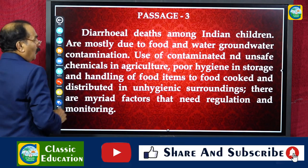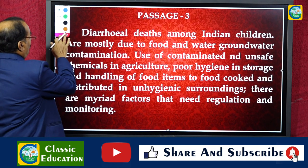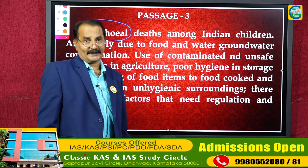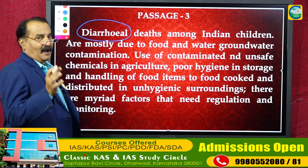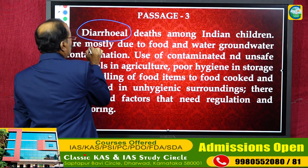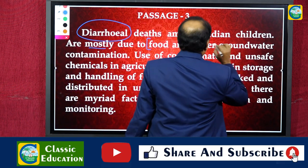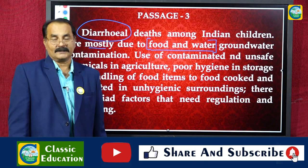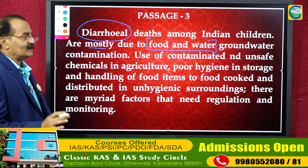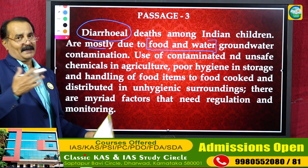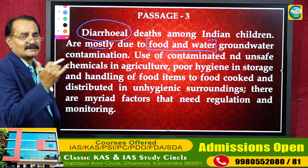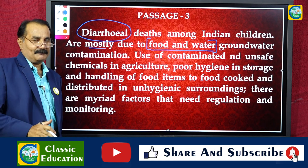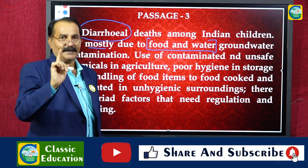Let us see what this paragraph is about. This paragraph is about a particular disease — diarrheal deaths among Indian children are mostly due to food and water. These are the main factors: food and water. They are not getting proper food, and the water they are using may be contaminated. Line by line, understand each point. When you are reading, picturize everything in your mind — that will help you answer the questions in a single attempt.